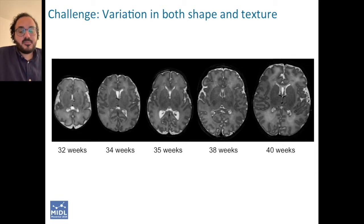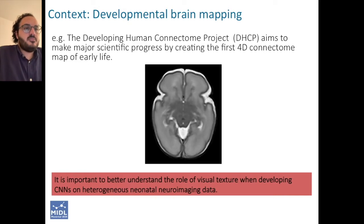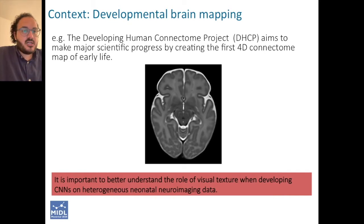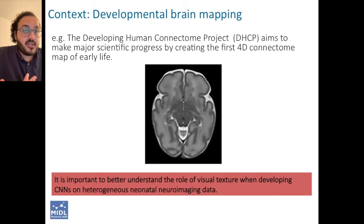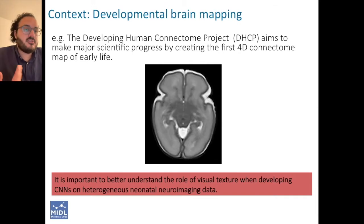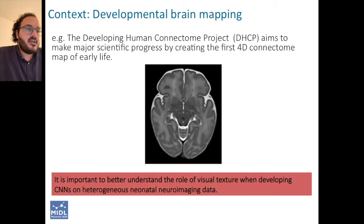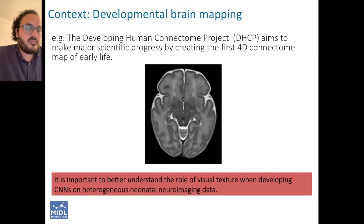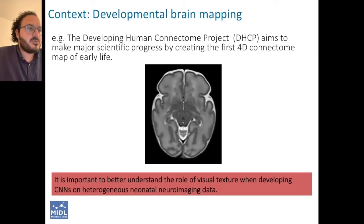The bigger project that we're part of is called the Developing Human Connectome Project, which aims to build the first 4D connectome map of early life. This kind of heterogeneous and continuously varying data makes it really important for us to better understand the role of visual texture when developing CNNs on such heterogeneous neuroimaging data.